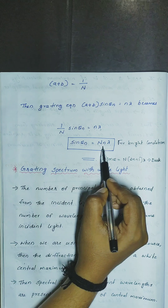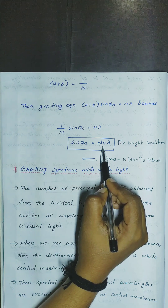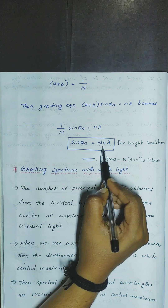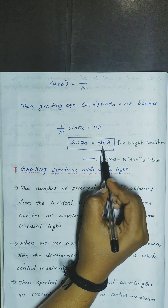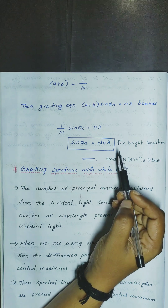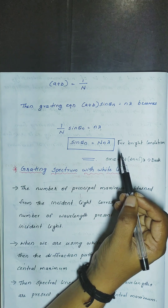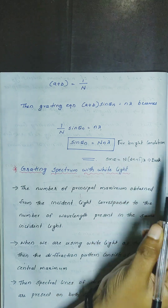This is the grating equation — this is important. You can write it in your textbook. We are going to read the capsule classes. You can write the textbook notes in this class. Thank you, take care.